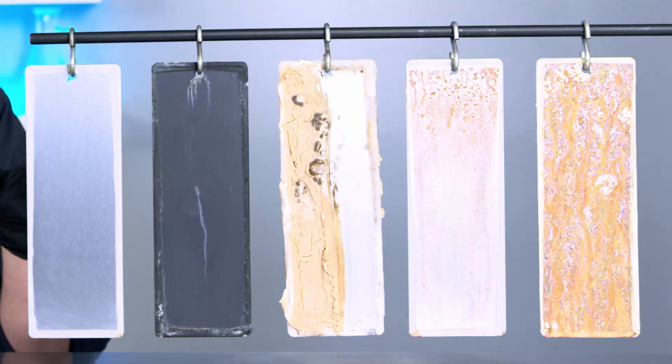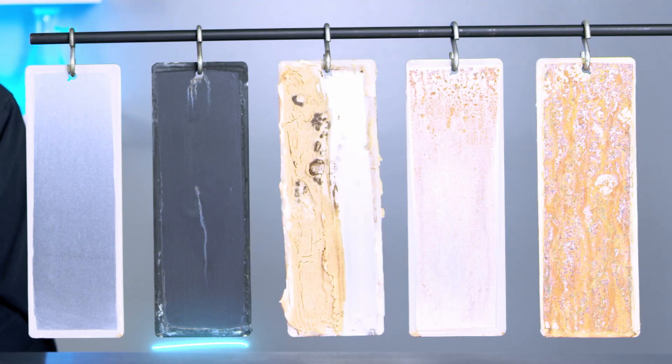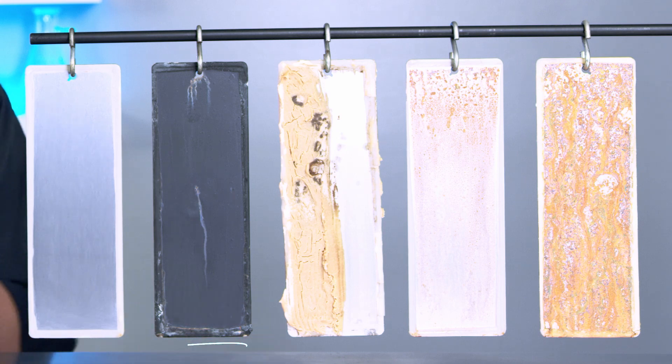If we take a look at this fourth panel, this is where we applied a rust paint. If we were to remove that rust paint from the surface of the metal, you would see underneath that it has completely protected the surface of that metal from preventing any sort of corrosion.